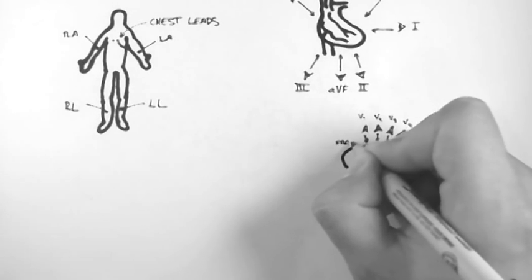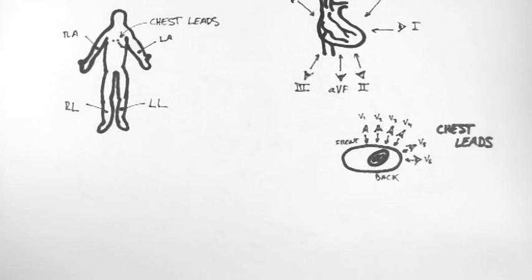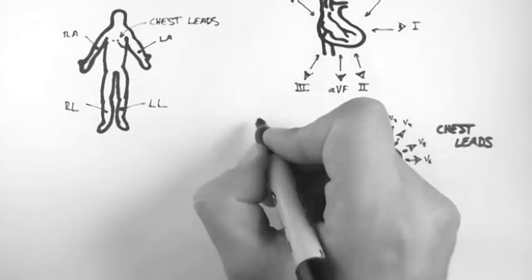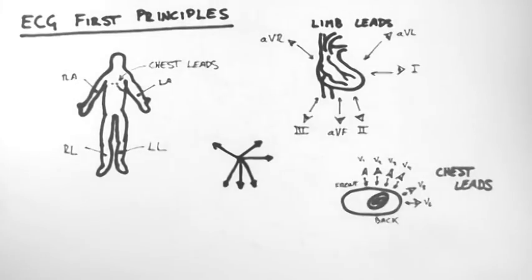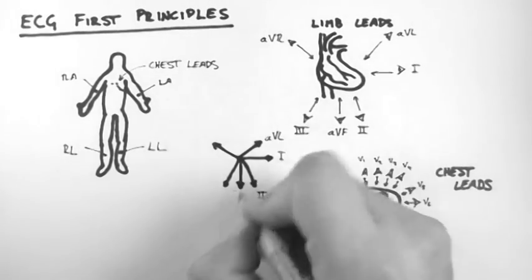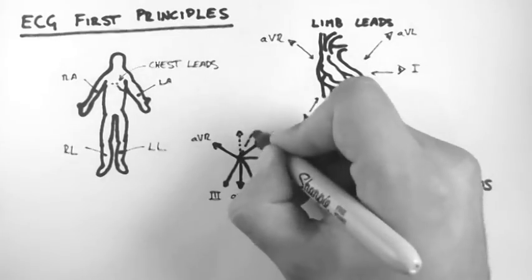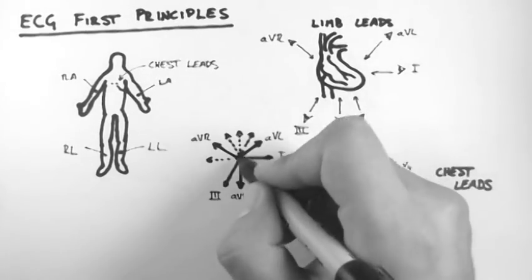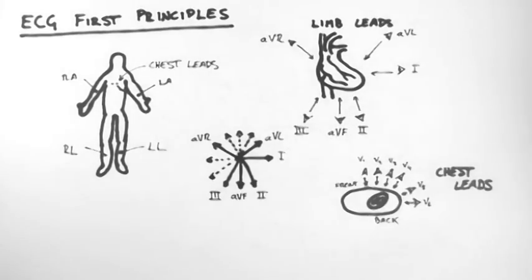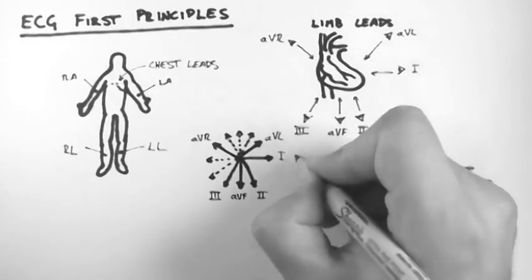And that's the front and the back of the torso. Now let's have a think about the limb leads again. If I draw up a diagram of the lead directions without the heart, we get an image that looks like this. If we extend these lines out in the opposite direction to which they point, we will see that we have every direction covered in 30 degree increments.